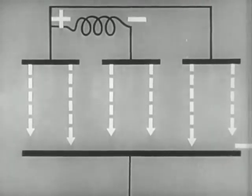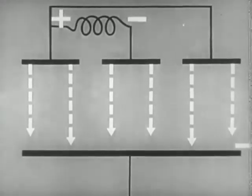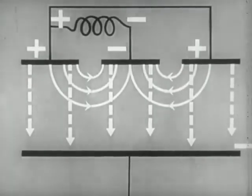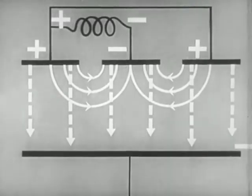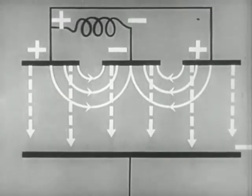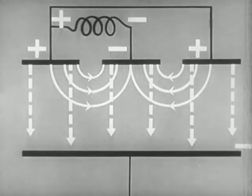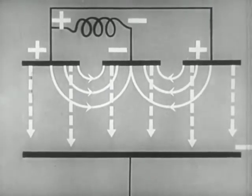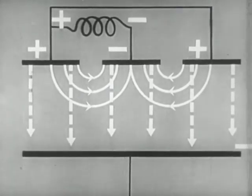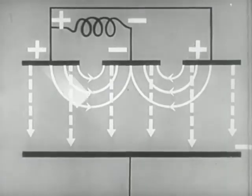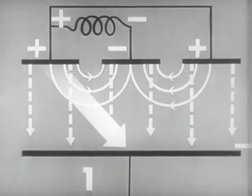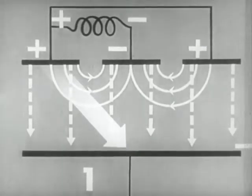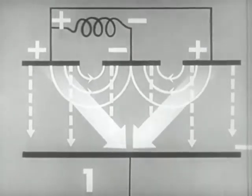Also, there will exist an RF field of the tank circuit. At the instant when the alternate anode segments are at their positive and negative values, the field of the tank circuit will look like this. The resultant of the combined fields will have this direction in region one, and this direction in region two.